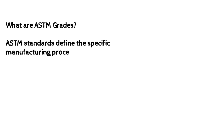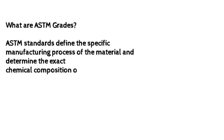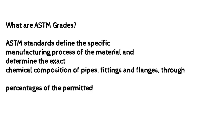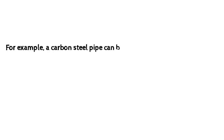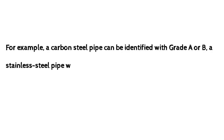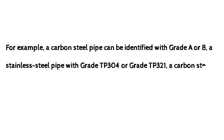What are ASTM grades? ASTM standards define the specific manufacturing process of the material and determine the exact chemical composition of pipes, fittings, and flanges through percentages of permitted quantities of carbon, magnesium, nickel, etc., and are indicated by grade. For example, a carbon steel pipe can be identified with Grade A or B, a stainless steel pipe with Grade TP304 or TP321, and a carbon steel fitting with Grade WPB, etc.